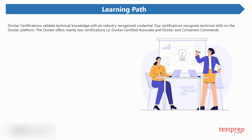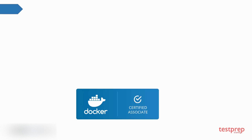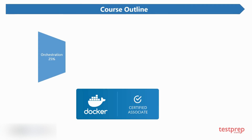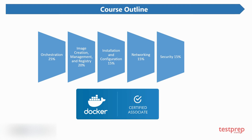Learning path: Docker certifications validate technical knowledge with an industry-recognized credential. Docker offers mainly two certifications: Docker Certified Associate, and Docker and Containers. The course outline is as follows — one, Orchestration, which comprises 25% weightage in the exam; two, Image Creation, Management and Registry, which comprises 20%; three, Installation and Configuration, which comprises 15%; four, Networking, which comprises 15%; five, Security, which comprises 15%; six, Storage and Volumes, which comprises 10% weightage in the exam.